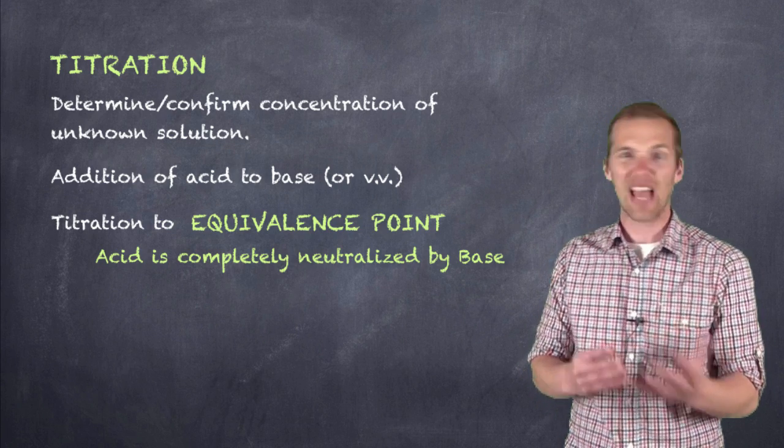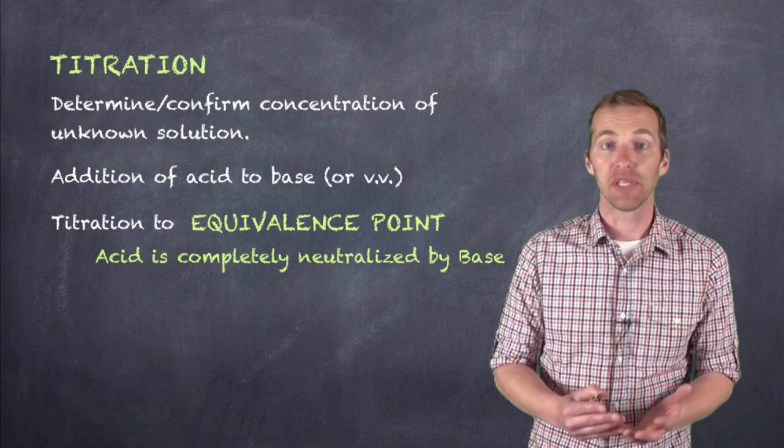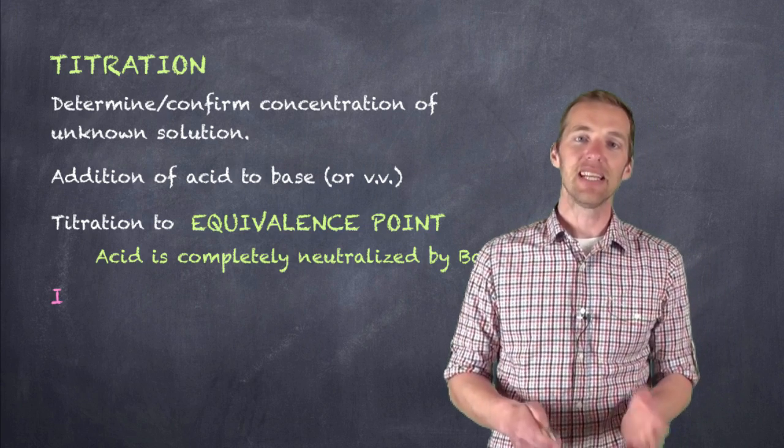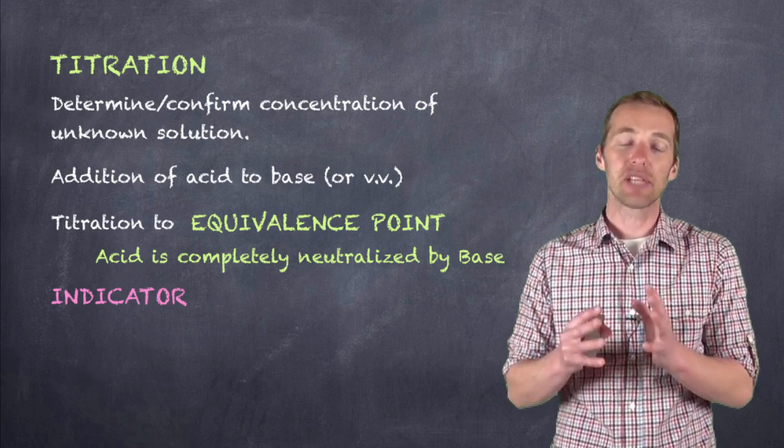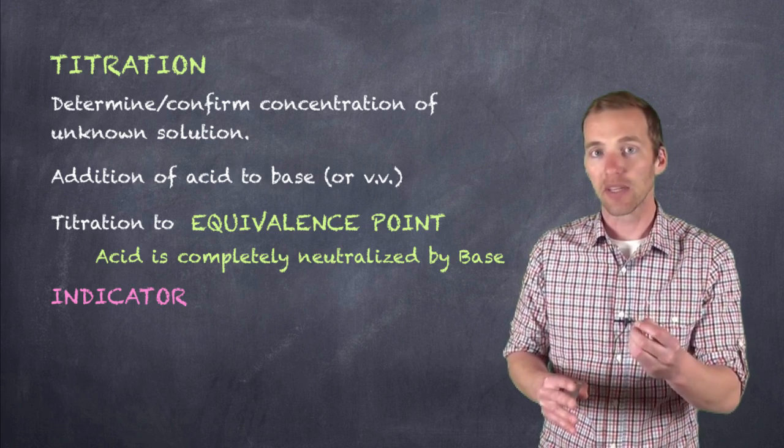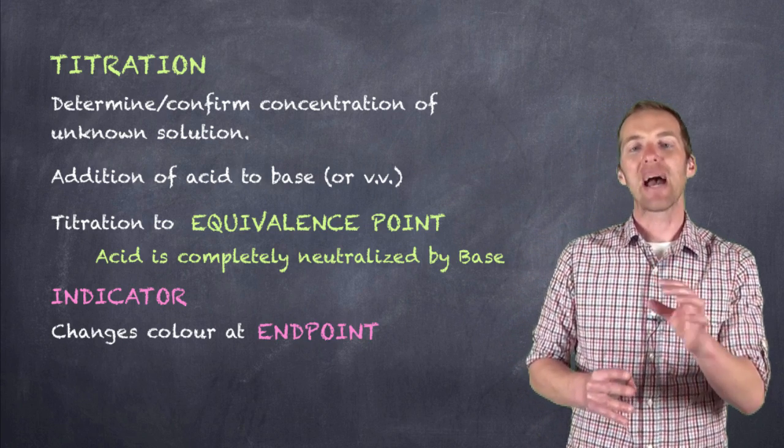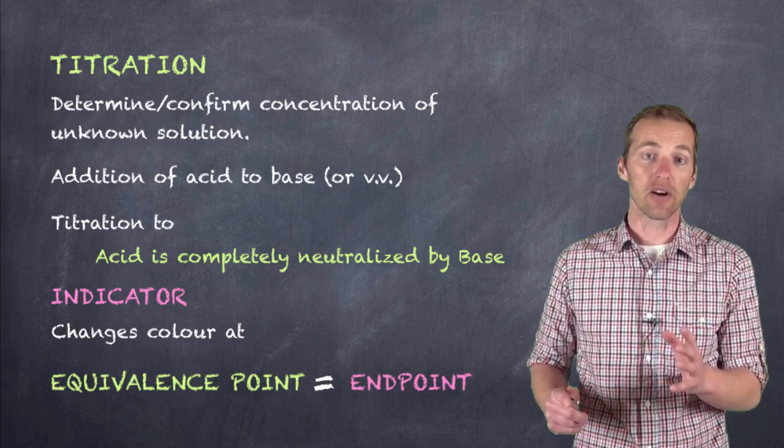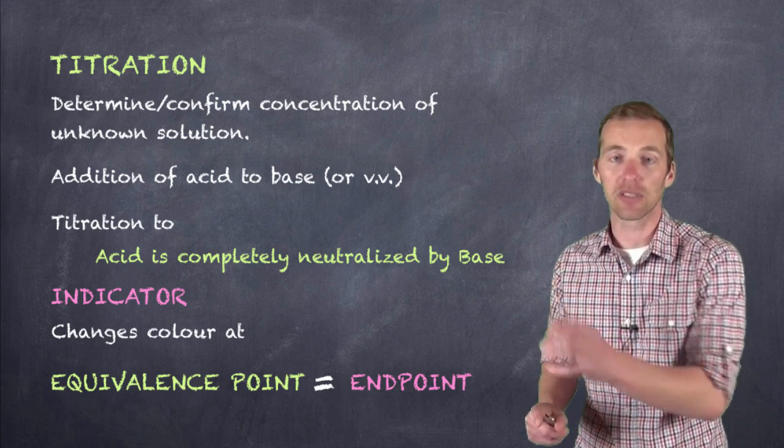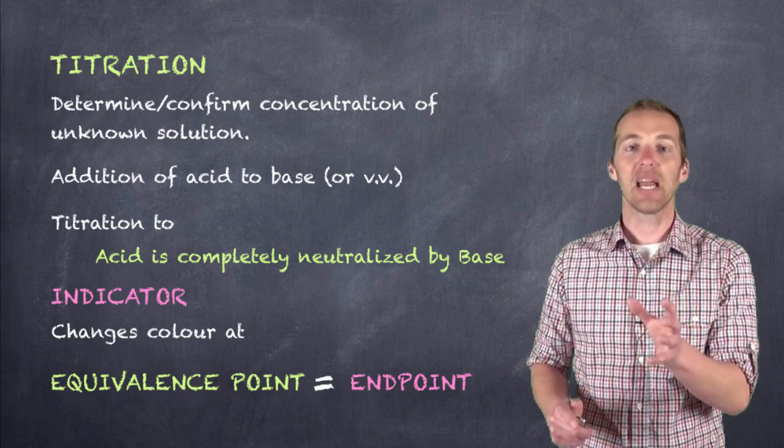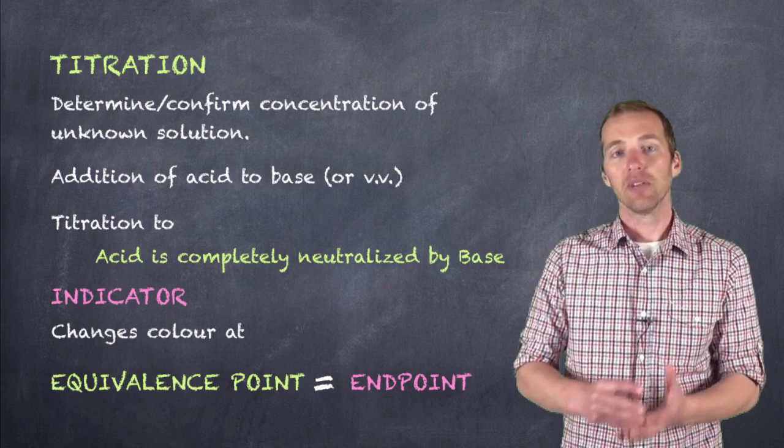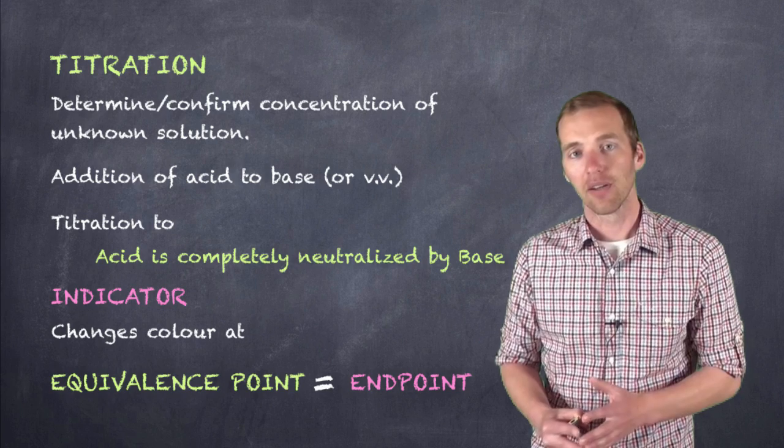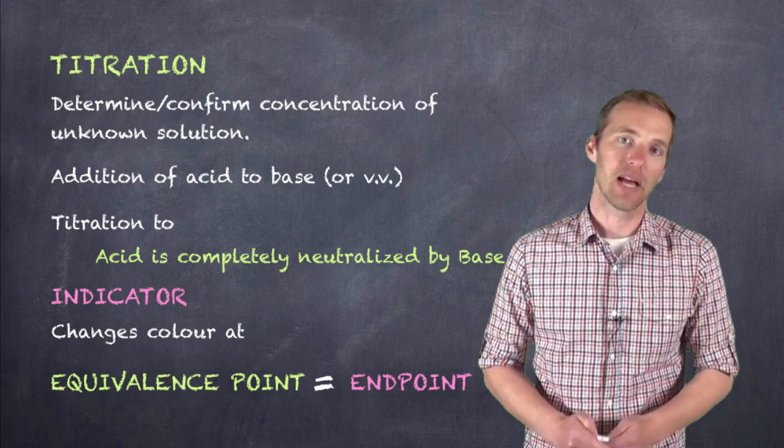But how do we know when that's happened? Well, we have to use something that indicates when that reaction is complete, and of course we refer to this as an indicator. And we have to take an indicator that's going to have an end point, that is when the indicator changes color, that matches up with this equivalence point. So oftentimes we try to choose an indicator that has an end point that is at the same pH of the equivalence point of our titration. So really we're picking indicators that are going to change color when the acid and the base completely neutralize one another.